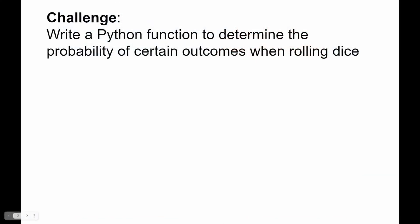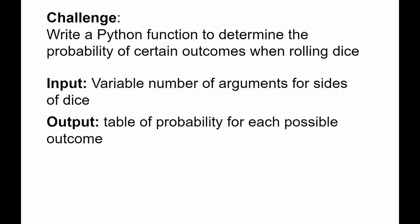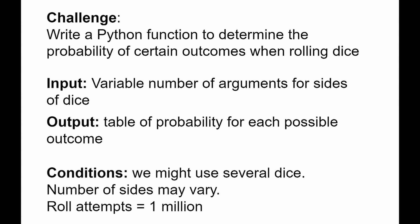The challenge for today is to write a Python function to determine the probability of certain outcomes when rolling dice. What we're going to get as the input is a variable number of arguments for sides of dice. This function needs to return a table of probability for each possible outcome. There are several conditions: we might use several dice, so the function needs to account for that possibility, and the number of sides per die may vary. To exclude any possibility to hard-code anything, we're going to set the attempts to a million tries.